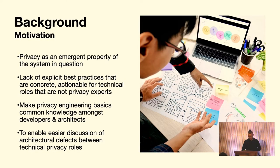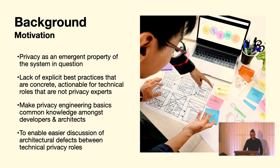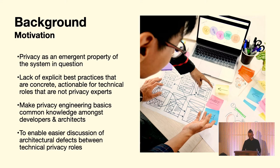So, why is this important? My motivations to talk about this: we can view privacy as an emergent property of our systems. Many of the big privacy flaws that I see are not necessarily found on a code level or scoped to a line or block of code. There's also, as far as I perceive it, a lack of explicit best practices that are concrete and actionable enough for technical roles that are not necessarily privacy experts themselves. That makes it hard for development teams or architects that don't know that much about privacy to create privacy-friendly solutions in the first place — meaning we're only catching it later, further to the right in the software development lifecycle. So I think we need to make privacy and engineering basics common knowledge amongst developers and architects.